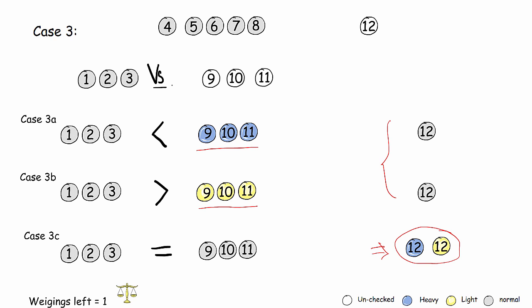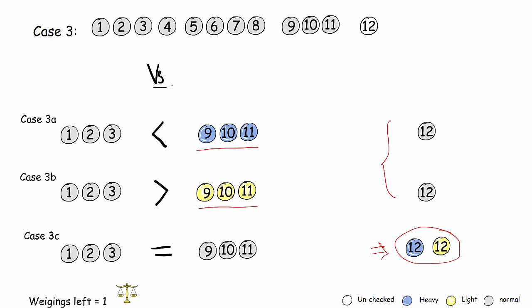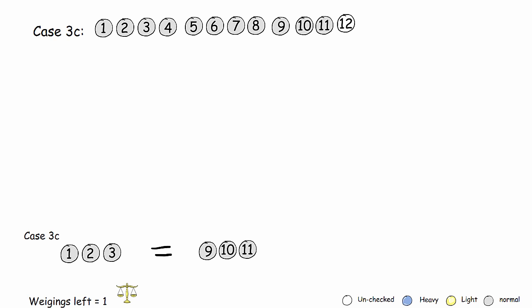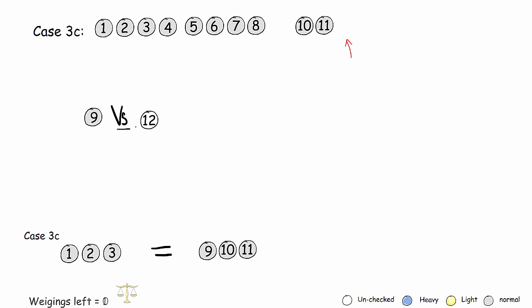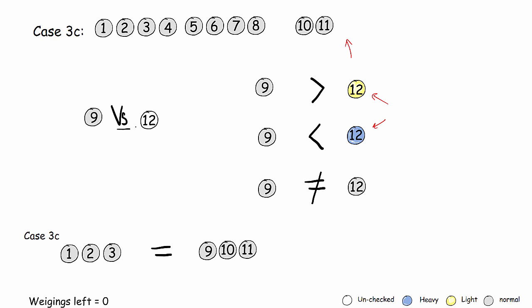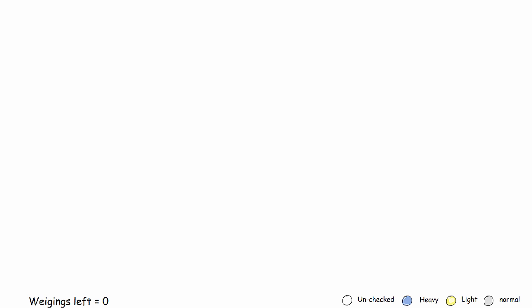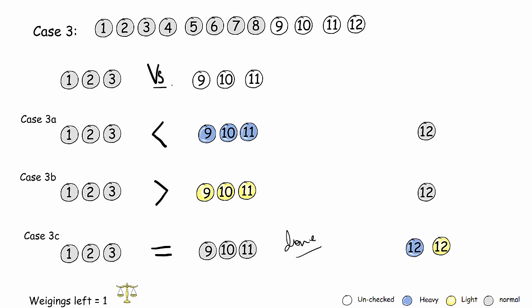The first two sub-cases are similar, so we'll deal with the third case first. All we need to do is weigh ball 12 against any of the remaining normal balls. Depending on which side the scale shifts, we can find out if our faulty ball is heavier or lighter than the rest. The scale in this case will not balance, because that would mean all balls are normal — a contradiction to the problem statement.